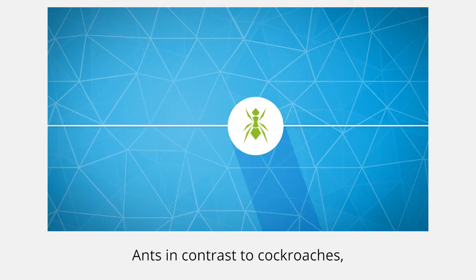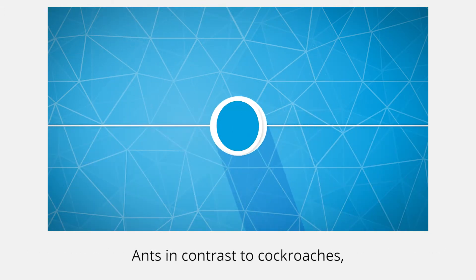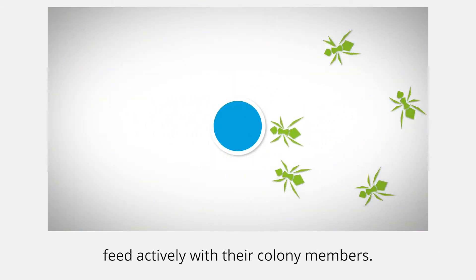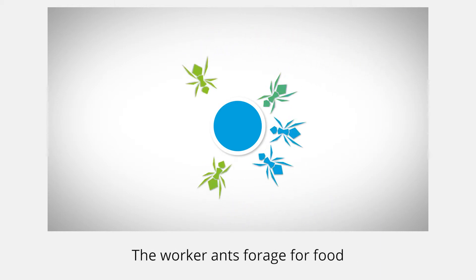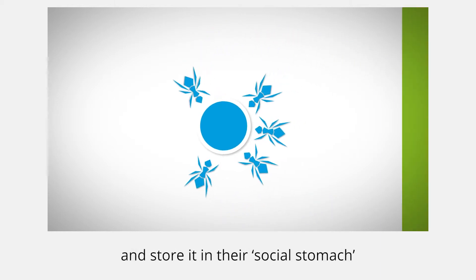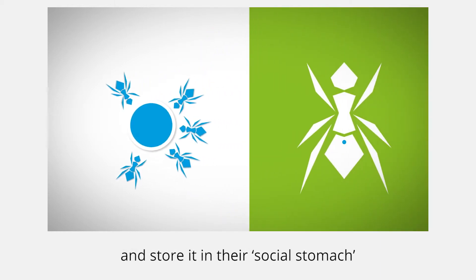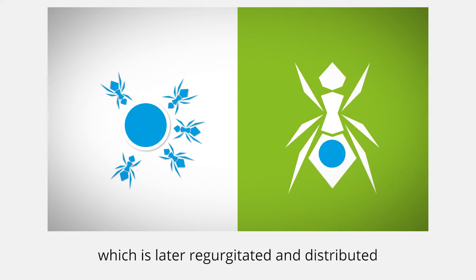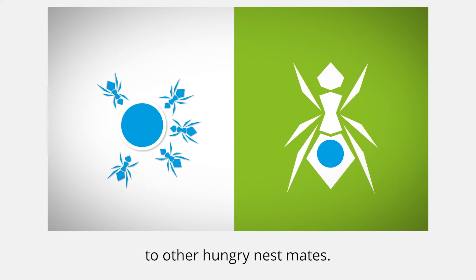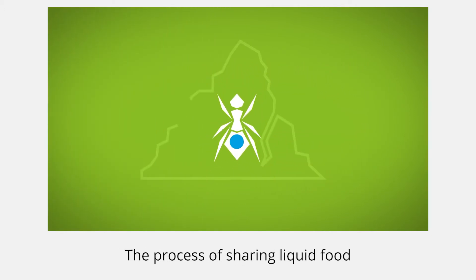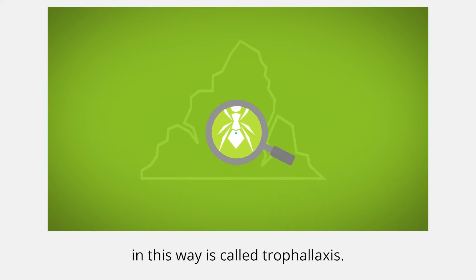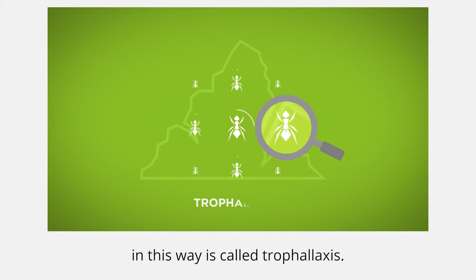Ants, in contrast to cockroaches, feed actively with their colony members. The worker ants forage for food and store it in their social stomach, which is later regurgitated and distributed to other hungry nest mates. The process of sharing liquid food in this way is called trophallaxis.